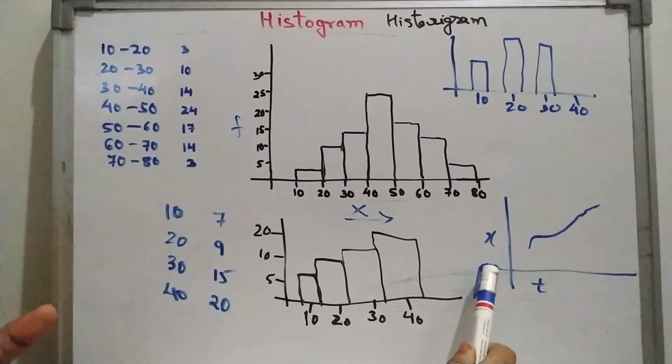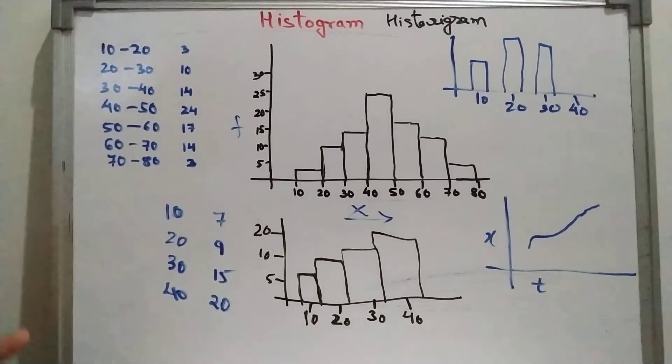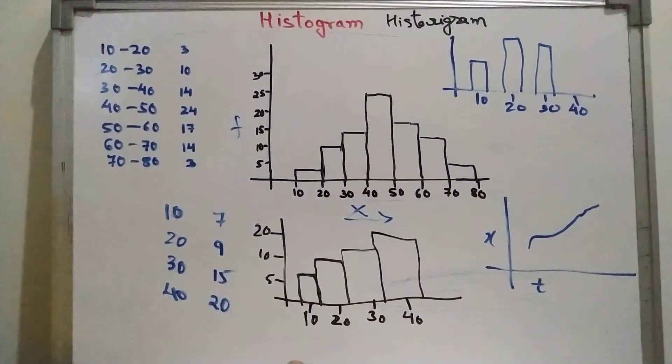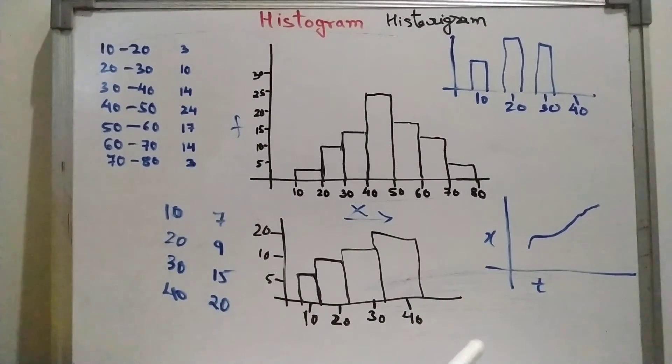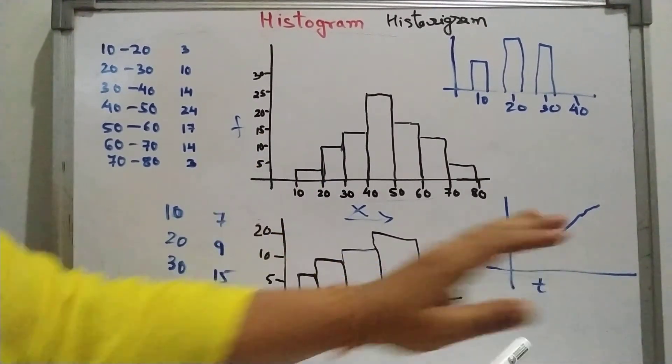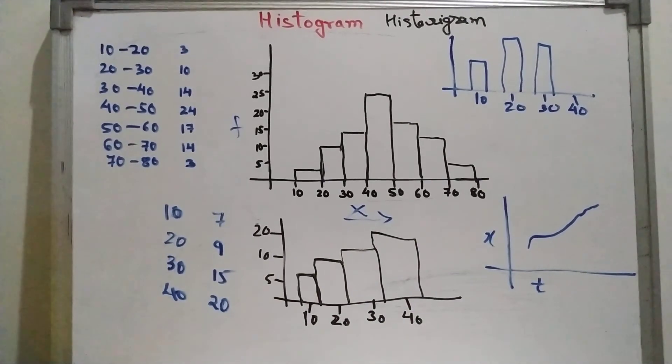By plotting the time against the variable, we will get time may be year, month, anything. So when we plot this, we will get a historygram. So historygram is not related to histogram. It is just a line graph. Hope it is clear. Thank you.